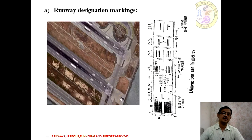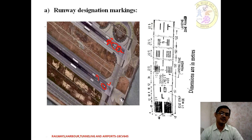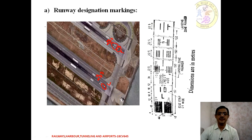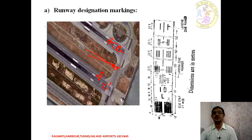In the image, the runway is represented by R28 — meaning it is the right side runway with 280-degree north orientation. Similarly, L28 is the left runway, also at 280 degrees north. If there is one more runway at center, it is represented by C. That is the identification or designation of runway marking.